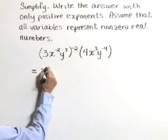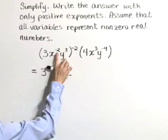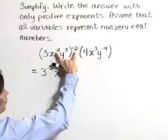So we have 3 to the negative 2, x to the... when we raise a power to a power, we multiply.